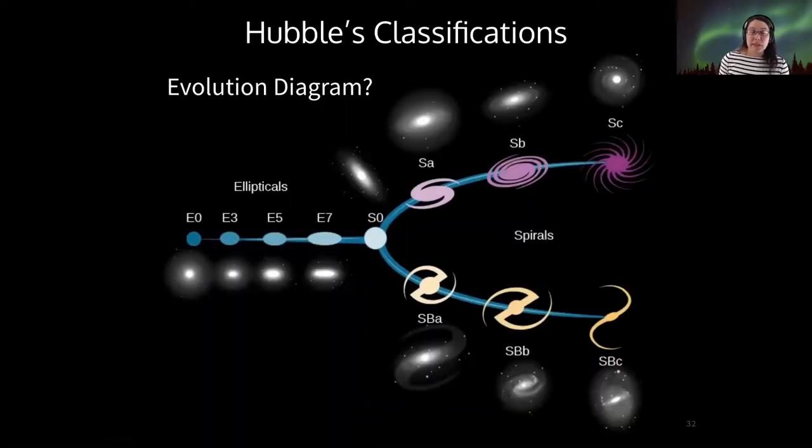So that brings us to this broader question: is Hubble's classification system an evolutionary diagram?